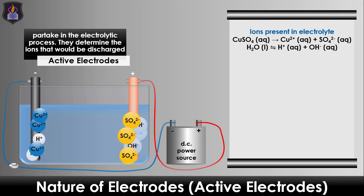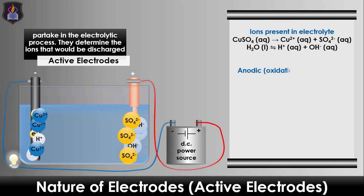At the anode, sulfate and hydroxide ions compete for discharge, but none of them is discharged. Instead, the copper atoms in the anode undergo oxidation by losing two electrons each, forming copper(II) ions in solution, as shown in the anodic half equation.